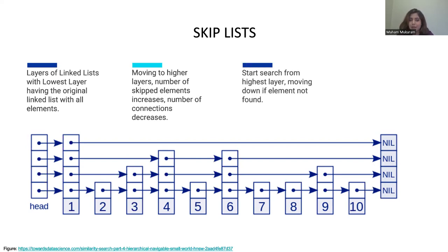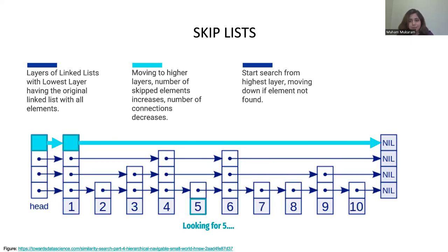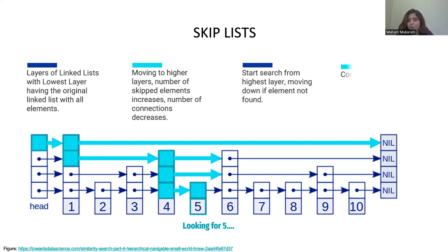When we want to search the skip list, first we define what we're looking for. Then we start from the head of the first layer and essentially search. If, for example, the number is less than five, we move forward and search the next element. If we land on an element greater than five, we move on to the next layer. We continue until we get to the number or less than the number, and keep doing this. On the last layer, we get five. The complexity of this is logarithmic due to the number of layers and the number of elements.